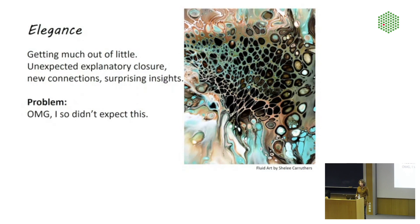Then there's the third aspect of beauty, which is quite vague. It's usually referred to as elegance. So that's basically when you get much out of little. You want a theory that is simple, yes, but you don't want it to be too simple because that would be boring. So philosophers sometimes call that unexpected explanatory closure, you know, when you have your aha moment, when something clicks into place. Other people have expressed it as a theory that makes new connections or that brings you surprising insights.